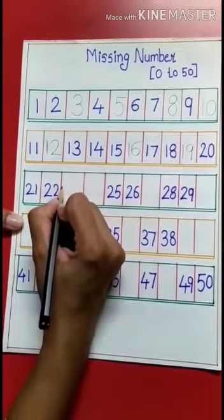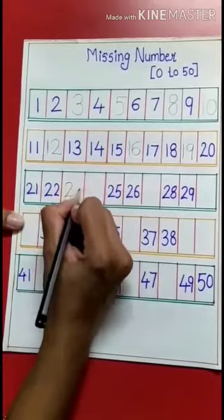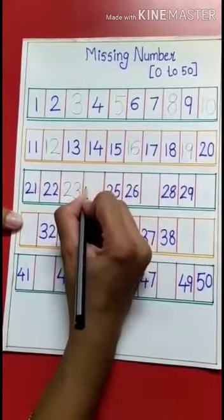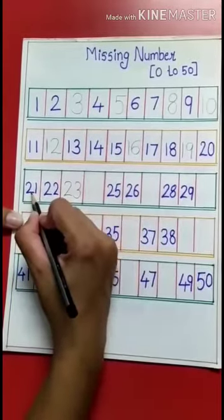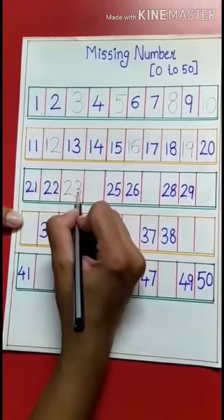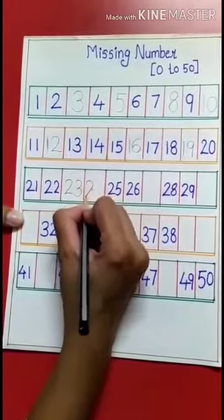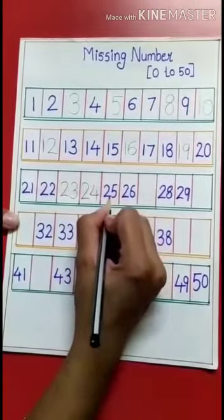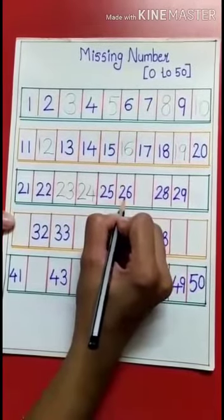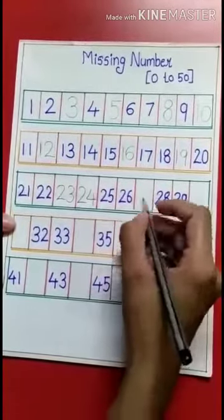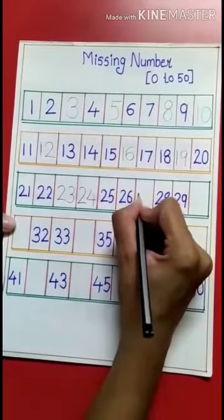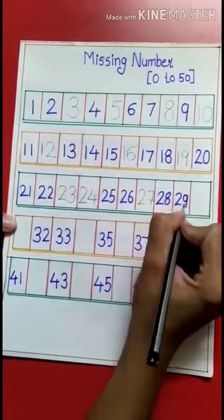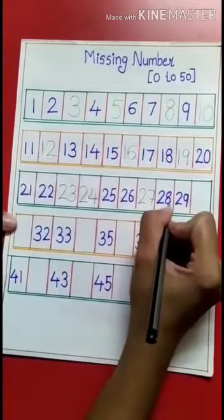Now start from 21, 21, 21, 21, 21, 22, 22, 23. Now tell me, what comes after 22? 22, 23, 23, 23. Then after 23, 23, 24, 24, 24, 24.